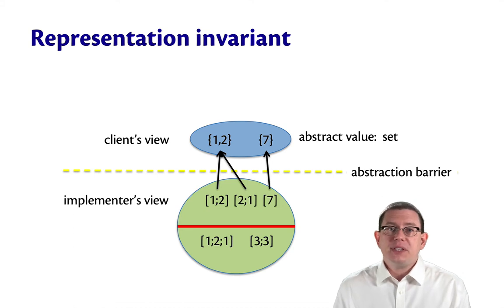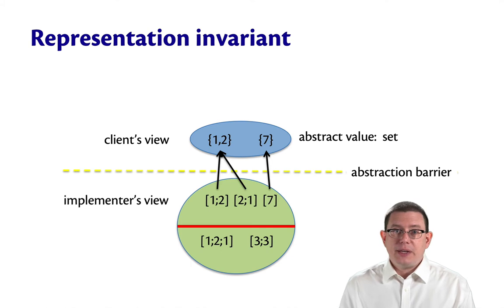The job of the representation invariant is to identify which values of the concrete type are allowable and which are not. So you can think of the representation invariant as being a kind of big thick red line in the set of concrete values.